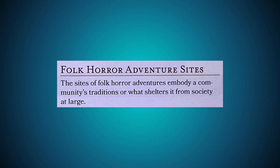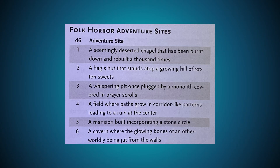The sites of folk horror adventures embody a community's traditions or what shelters it from society at large. The folk horror adventure sites D6 includes: a seemingly deserted chapel that has been burnt down and rebuilt a thousand times; a hag's hut that stands atop a growing hill of rotten sweets; a whispering pit once plugged by a monolith covered in prayer scrolls; a field where paths grow in corridor-like patterns leading to a ruin at the center; a mansion built incorporating a stone circle; and a cavern where the glowing bones of an otherworldly being jut from the wall. A hag's hut on a pile of candy — you can't do better than that.